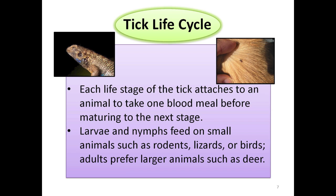In the tick life cycle, each life stage of the tick attaches to an animal to take one blood meal before maturing to the next stage. Larvae and nymphs feed on small animals such as rodents, lizards, or birds. Adults prefer larger animals such as deer. On the left is a picture of a lizard with nymphal and larval ticks attached and taking a blood meal in the small holes on either side of the head — at least eight immature ticks are attached. On the right is a picture of an adult tick crawling in the fur of a dog looking for a place to attach and feed.